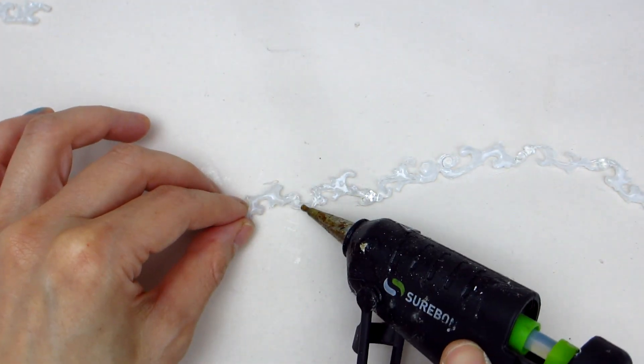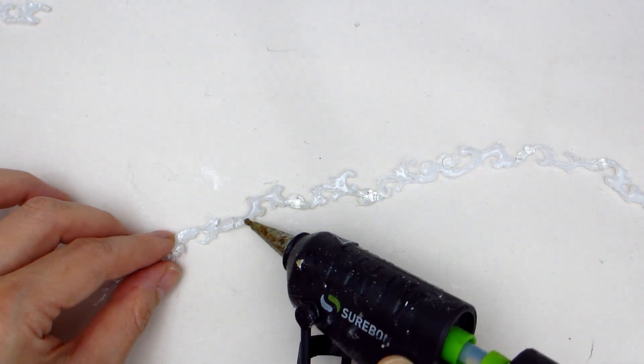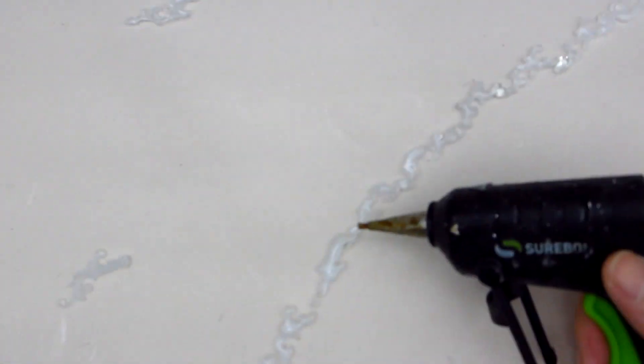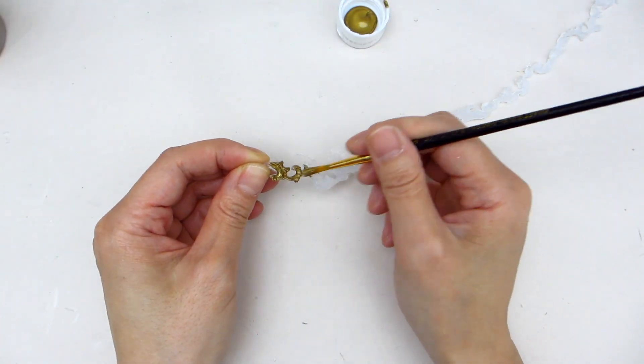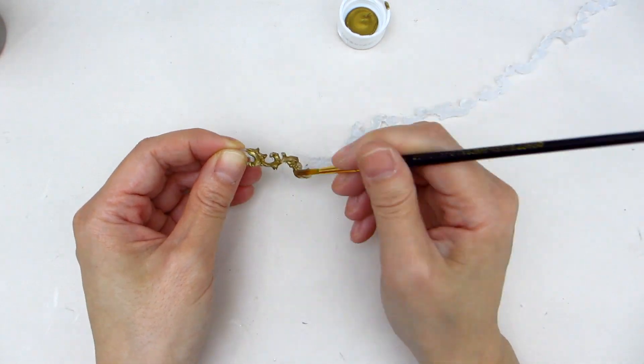I will attach each individual piece together with some hot glue until I have one long piece. The vine piece is now ready to be painted. As you apply the paint, the design starts to show through.